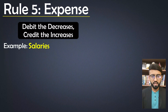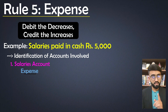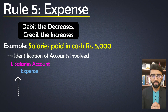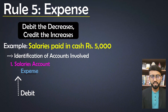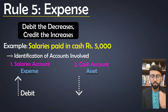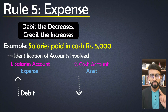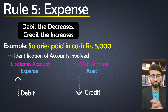For expenses, for example, salaries paid in cash, Rs. 5,000. Salary is an expense for the business and the expense is increasing. As per the rule — debit the increases — salary account will be debited. The second account is cash, which is an asset and it is decreasing because the business made a payment. So as per the asset rule — credit the decreases — cash account will be credited. Salaries account debited and cash account credited by Rs. 5,000.